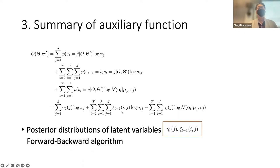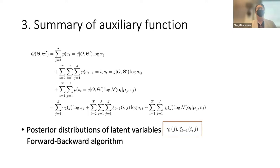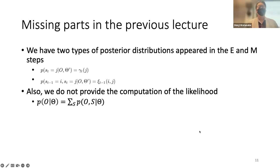The third part is the auxiliary function. In the EM algorithm, instead of directly computing the likelihood, we use an auxiliary function decomposed into three parts: one related to the initial weight, one to the transition weight, and one to the Gaussian distribution. However, we left the gamma and zeta latent variables undefined — these can be solved by the forward-backward algorithm, which is today's main lecture. These variables also appear in the parameter estimation equations.